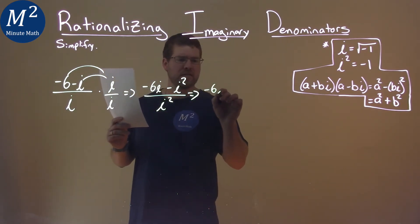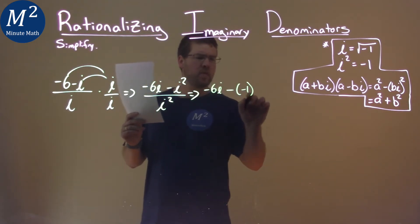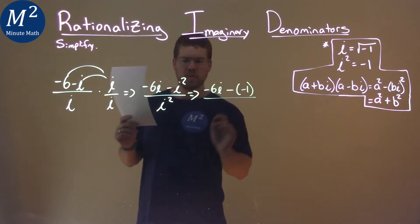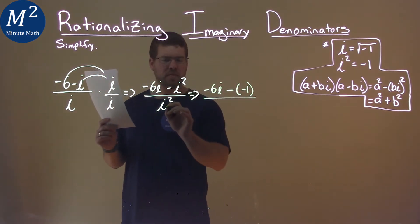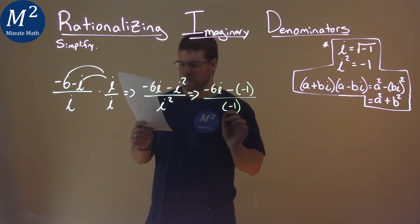So we have negative 6i minus a negative 1 over — well, i squared is just negative 1 here.